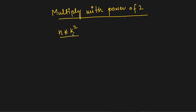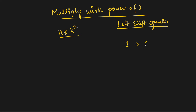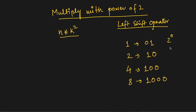To solve this, we are going to use the left shift operator. For number 1, the binary representation is 01; for 2 it is 10; for 4 it is 100; and for 8 it is 1000. These correspond to 2^0, 2^1, 2^2, and 2^3 respectively.